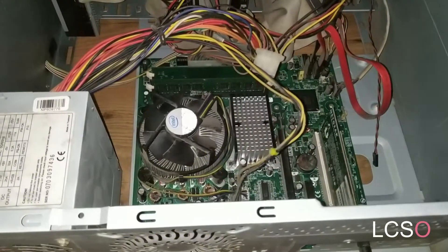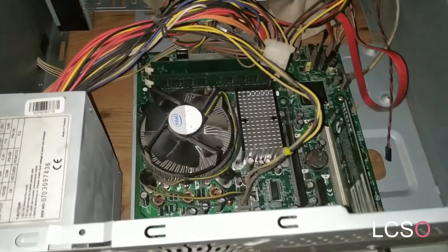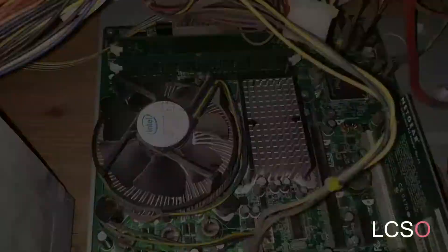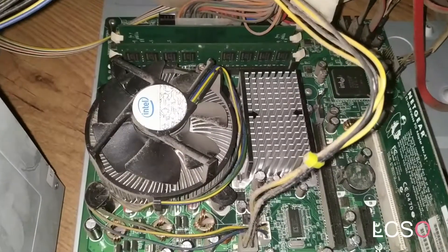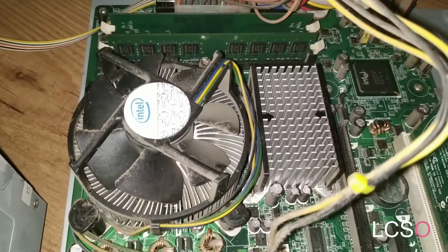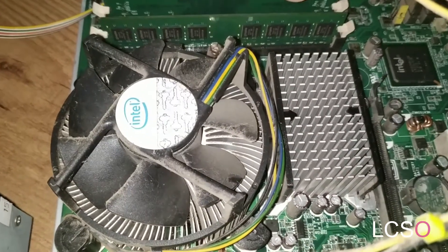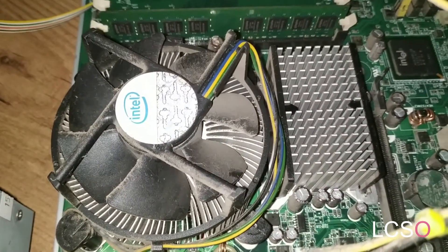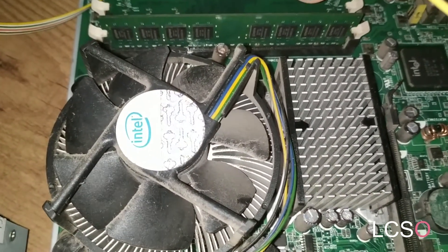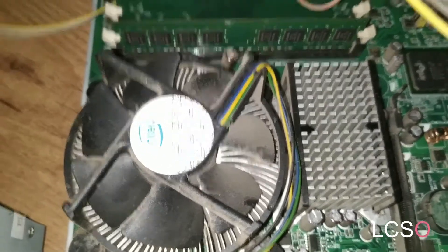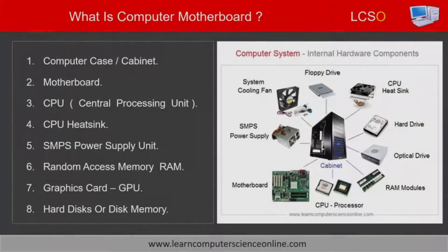The microprocessor chip is protected from damage caused by excessive heat by mounting a special heat sink on top of the processor chip. The miniature fan of the heat sink provides adequate ventilation and helps to cool down the processor chip. Let us move on to the next motherboard component.